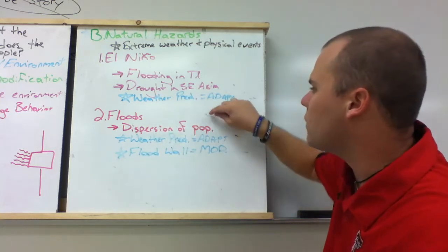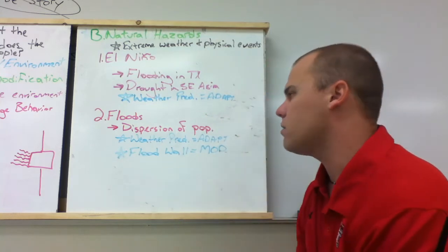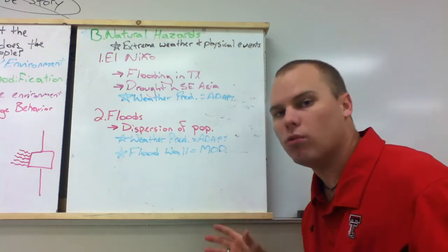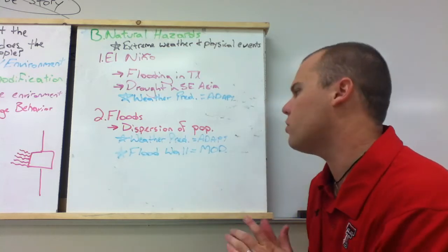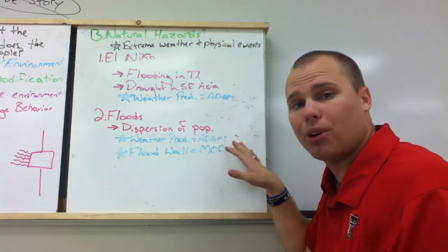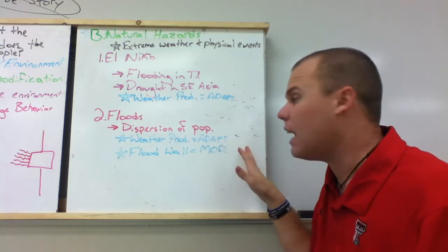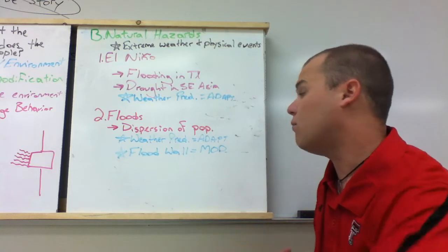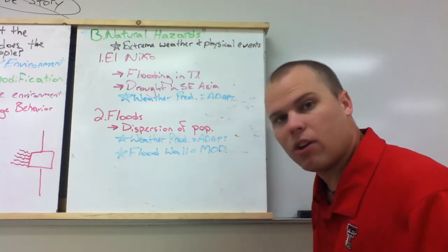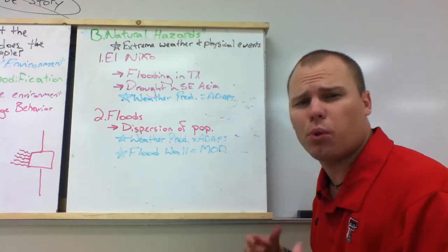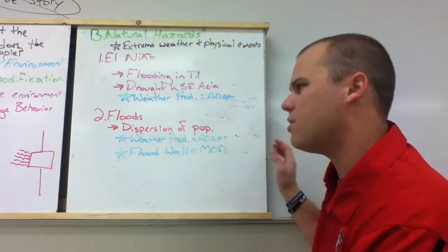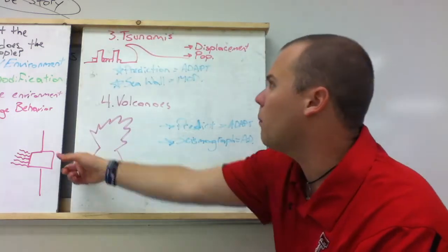The next one is kind of a subset of El Niño, and that is floods. Floods can create a dispersion of population, meaning people can move because of floods and because of flooding zones. But adaptation versus modification, again, weather prediction would be an adaptation. Modifications might be creating flood walls, areas that normally flood, blocking them in where they don't flood. Maybe creating better drainage systems to where the floodwaters can go somewhere. But still, modifications with floods is kind of difficult to come up with.